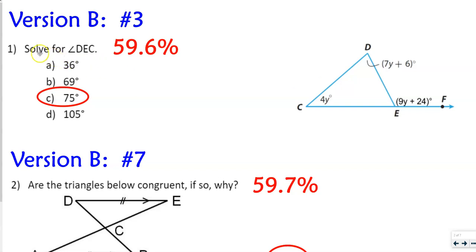If you have version A, we're on number one. If you have version B, we're on number three. I want to talk about the fact that 59.6% of y'all got this correct.